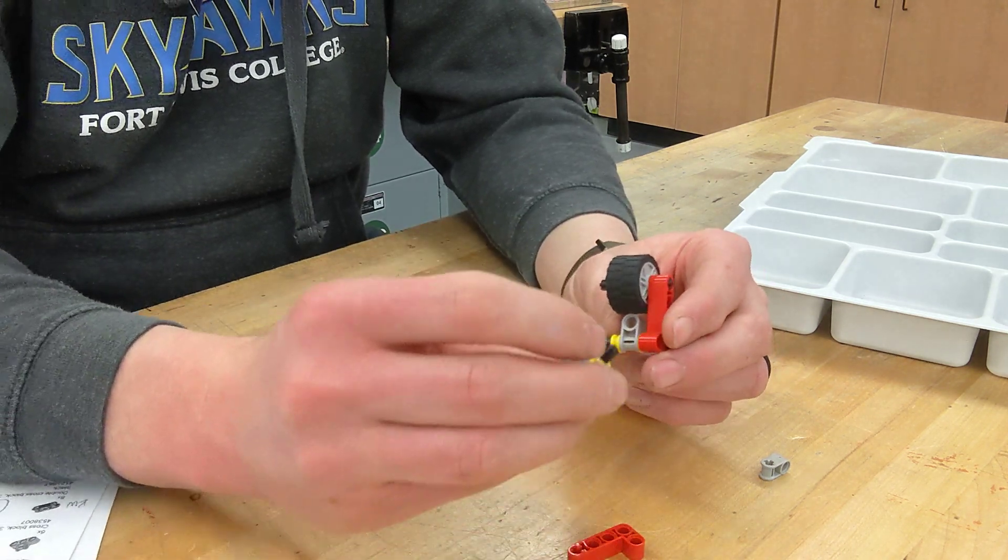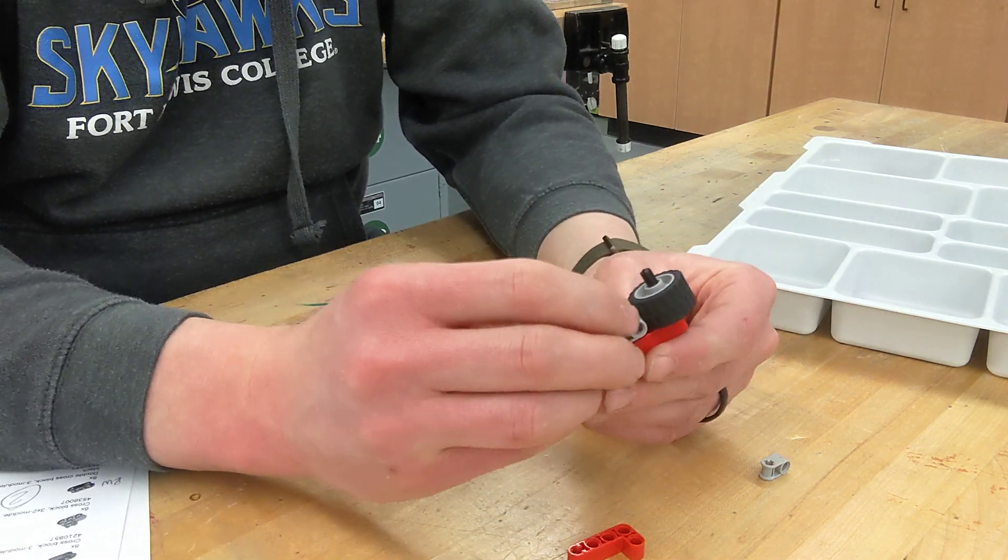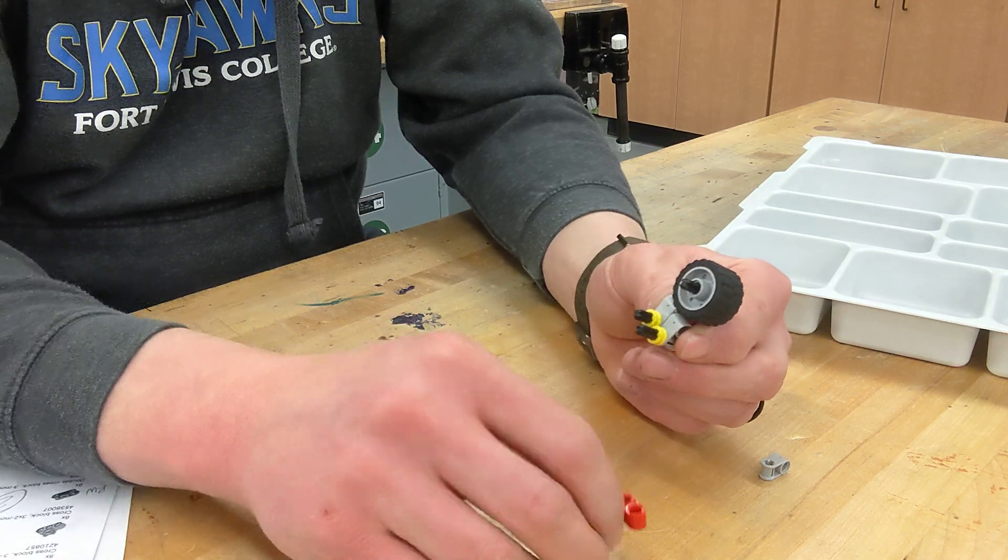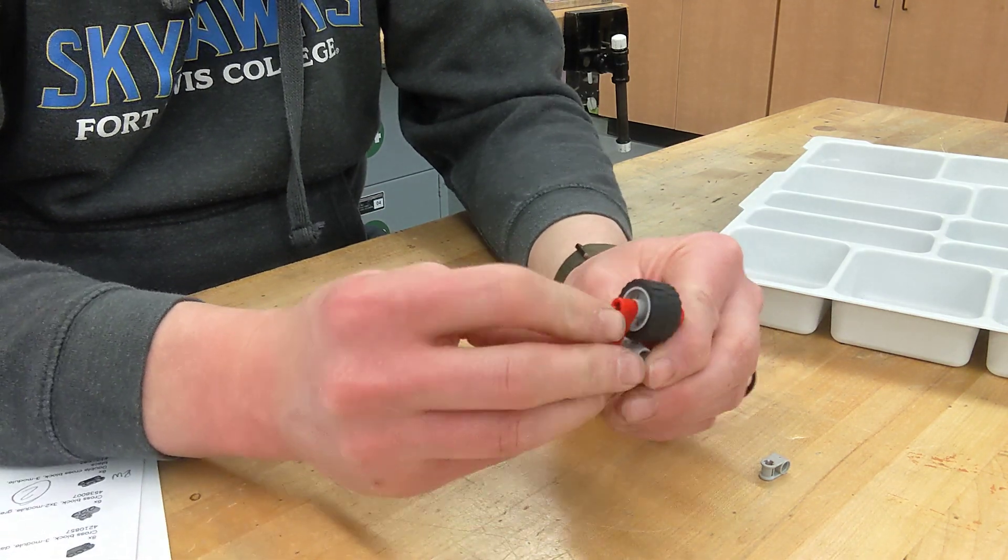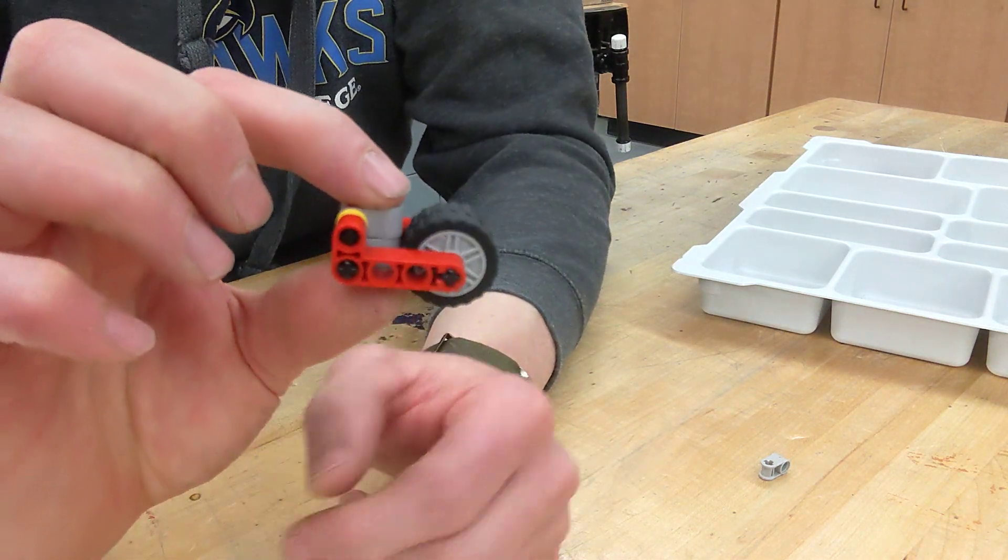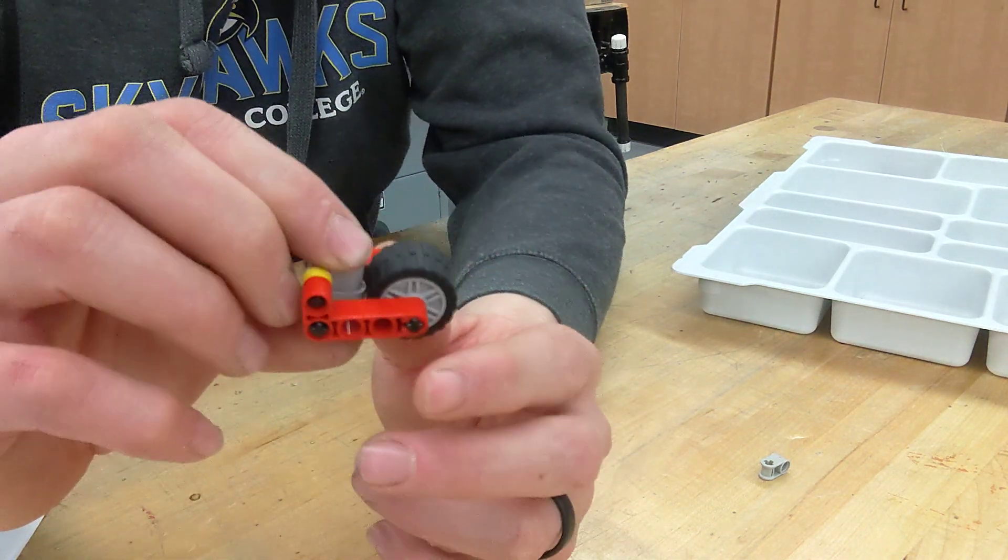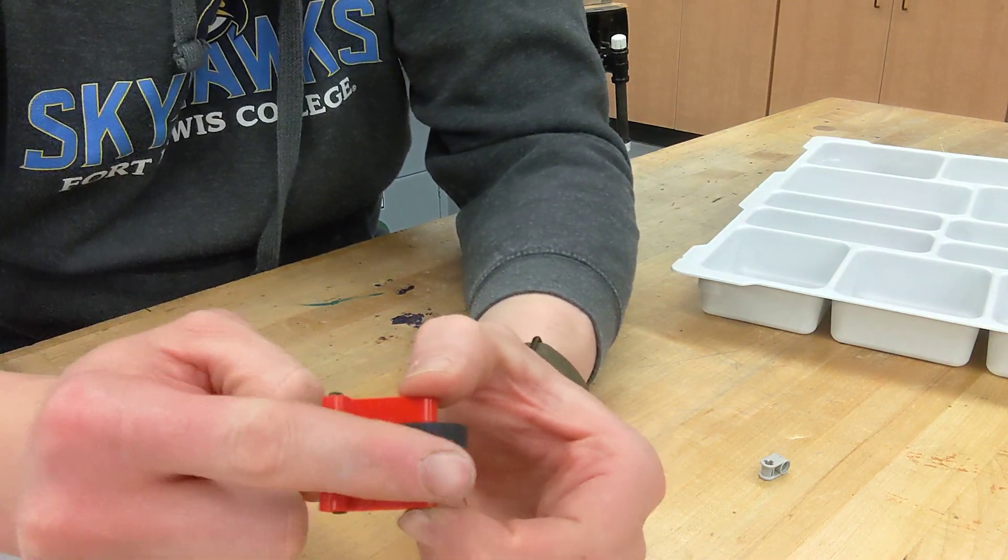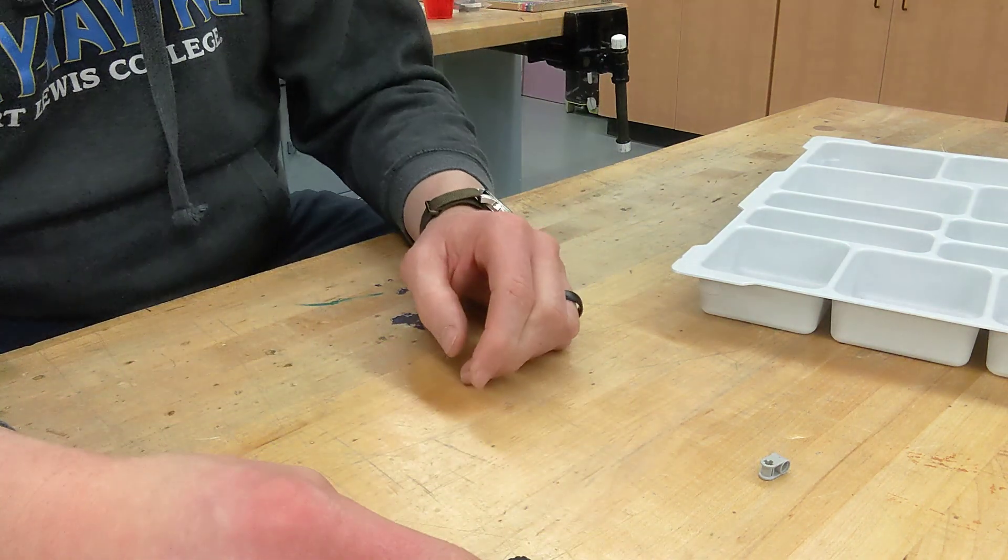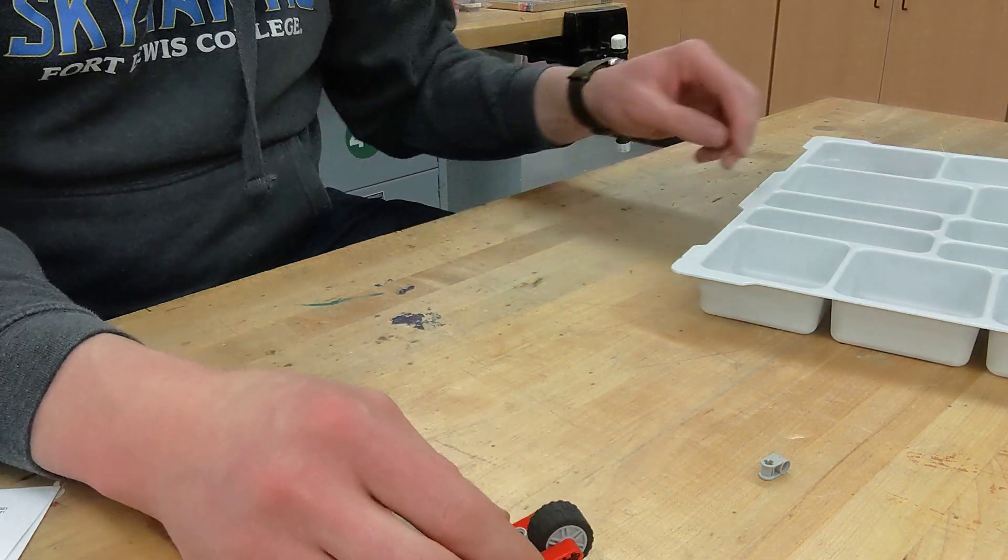Take these parts that we built and put it in the two vertical ones, and then from there we are going to sandwich that all together to give us this rear wheel. Now make sure that these are pointed towards the tire here.